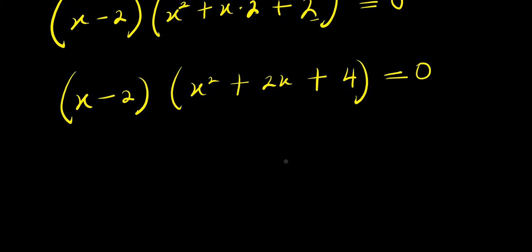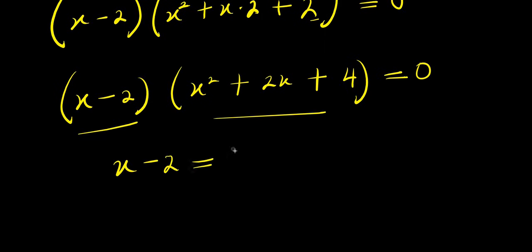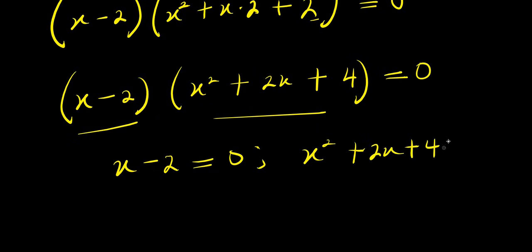So from here, I will equate each of these to 0: x minus 2 equals 0, and we also have x squared plus 2x plus 4 equals 0.